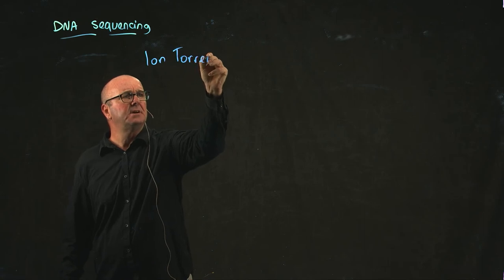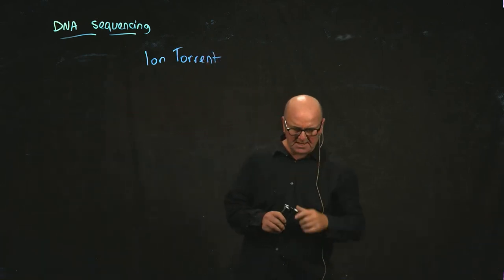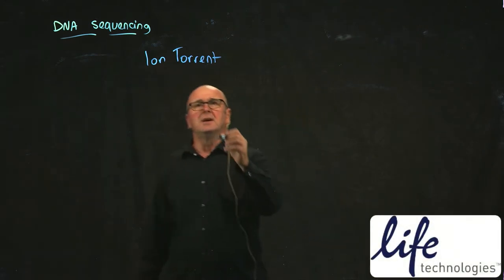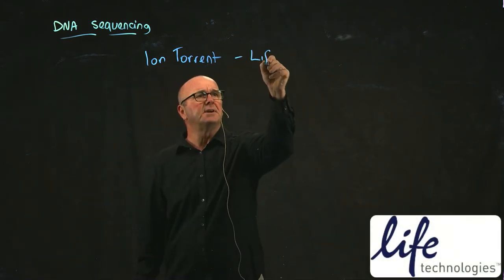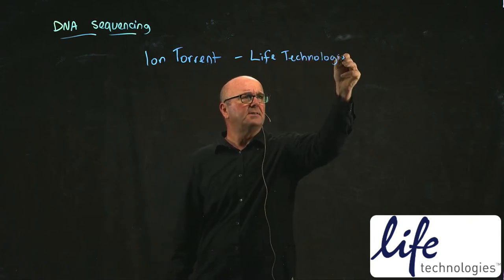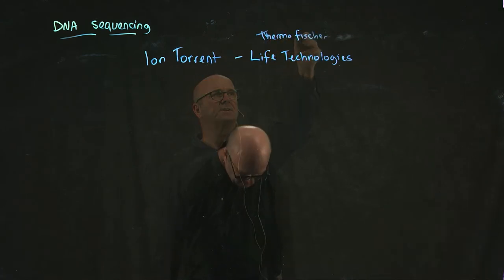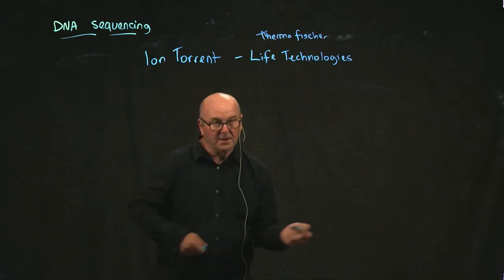About the same time that Illumina was coming on the market, there was a sequencing platform called Ion Torrent, and Ion Torrent was developed by a company called Life Technologies, now called Thermo Fisher.